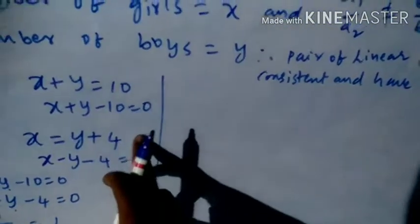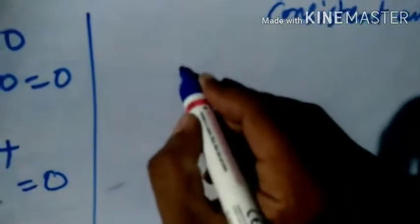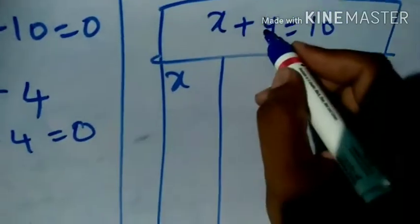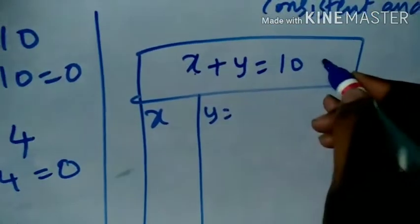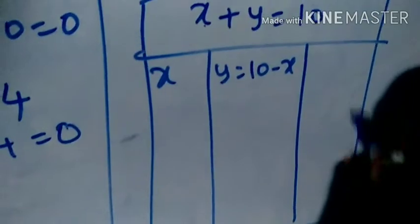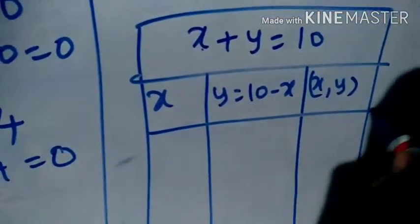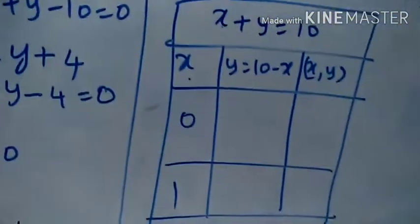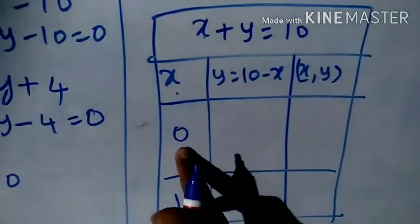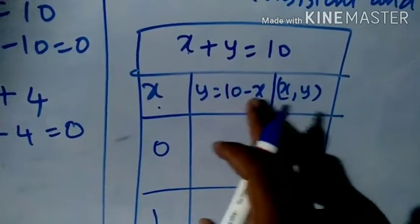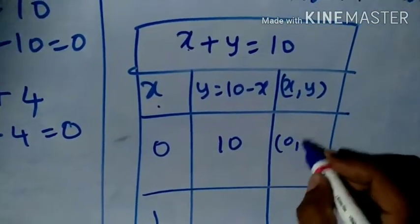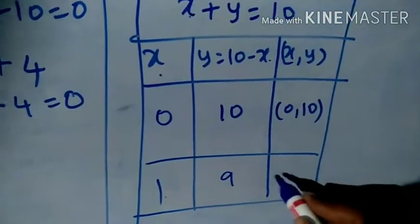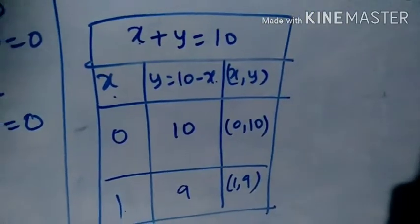Now write the table of values for both equations. For x plus y equals 10, y equals 10 minus x. Substituting x equals 0: y equals 10, giving point (0, 10). Substituting x equals 1: y equals 9, giving point (1, 9).